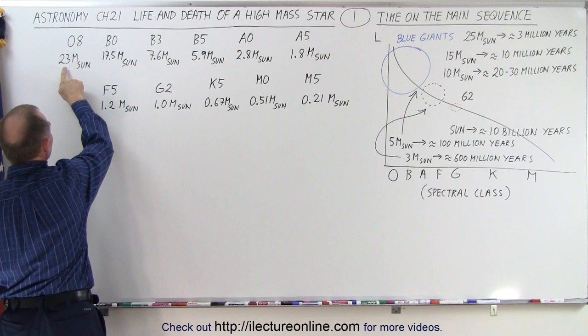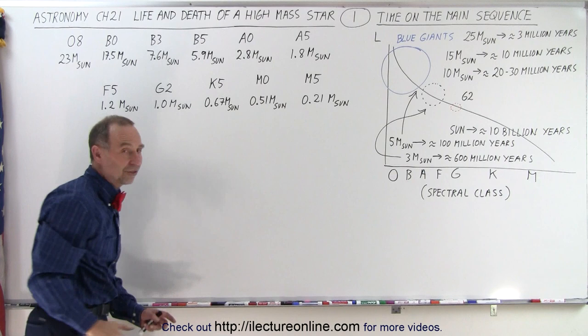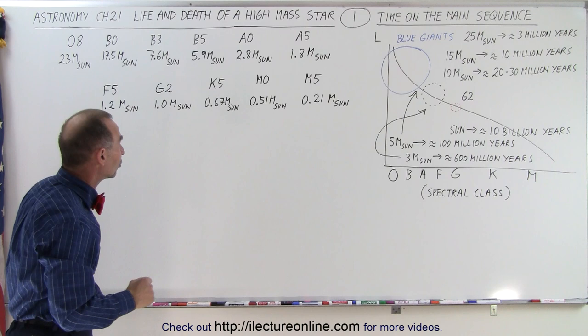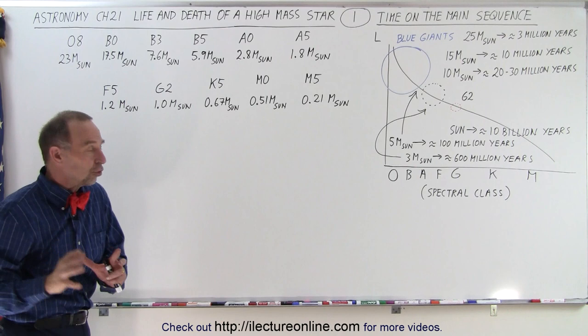An O8, which is about the largest of the stars that are out there, has 23 times the mass of the Sun. A B0, 17.5 times the mass of the Sun. A B3, 7.6 times the mass of the Sun. And the B5, 5.9 times the mass of the Sun. So you can see that B class stars and O class stars are just absolutely gigantic stars. Then we have the A0 stars, 2.8 times mass of Sun. A5, 1.8 times the mass of the Sun. And F5, 1.2 times the mass of the Sun. So those are stars just slightly bigger than the Sun.